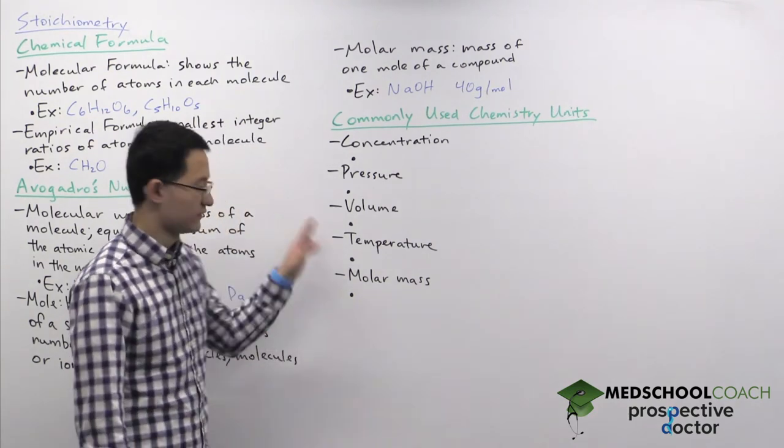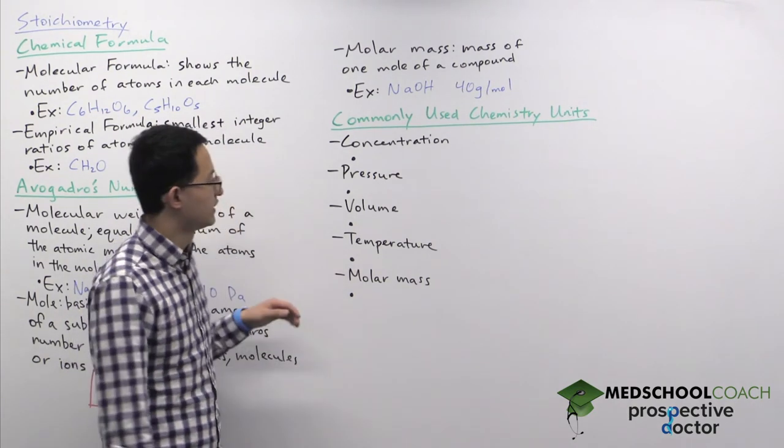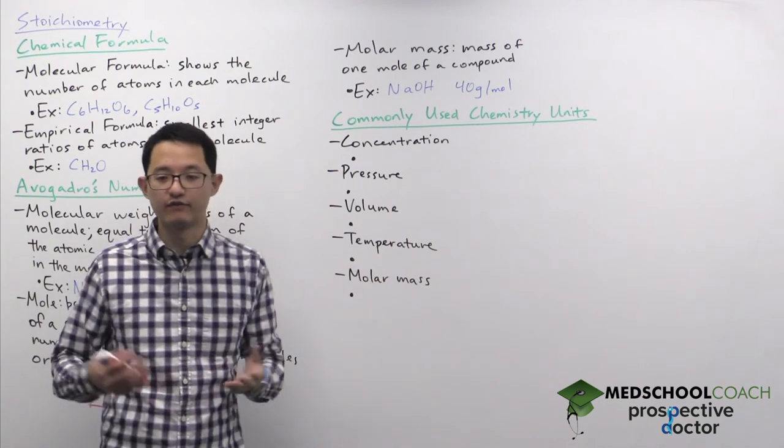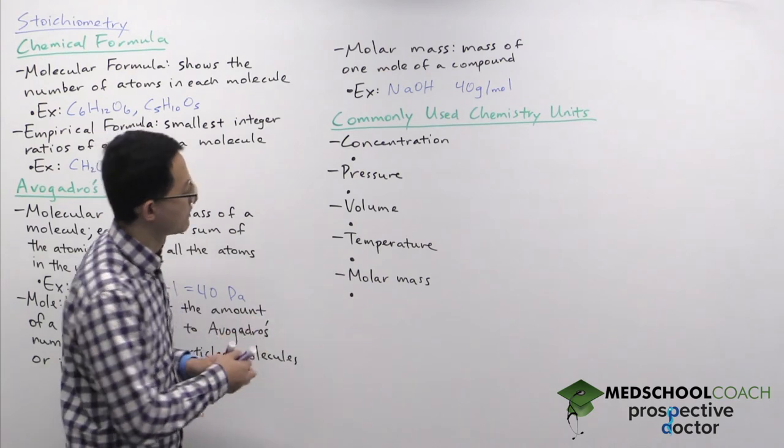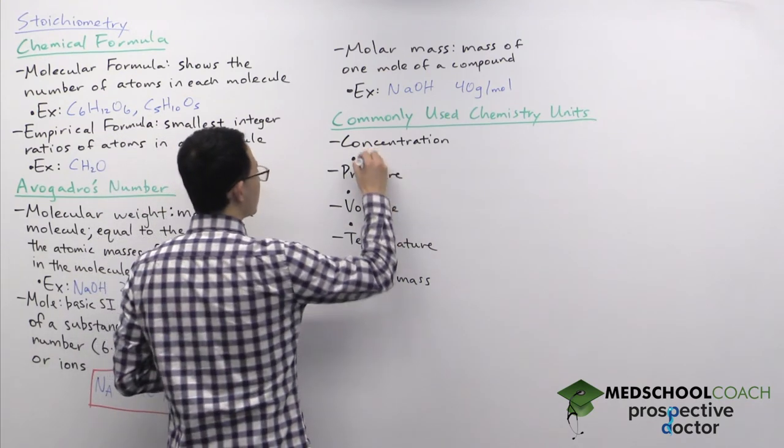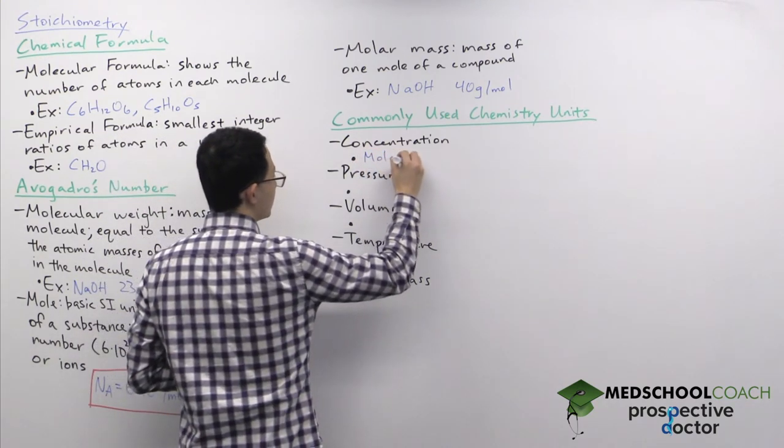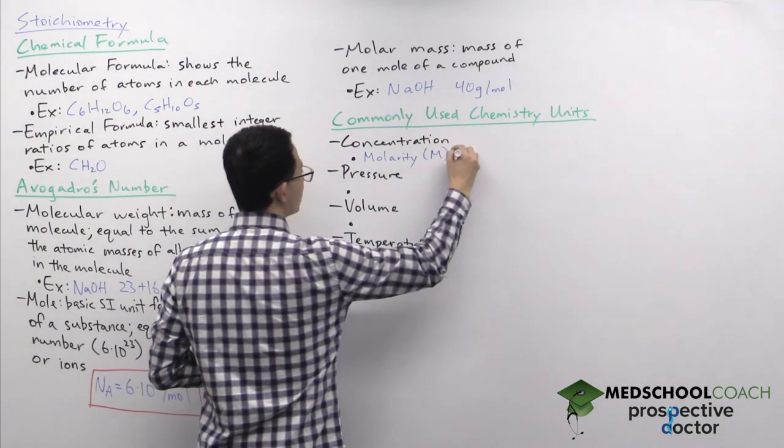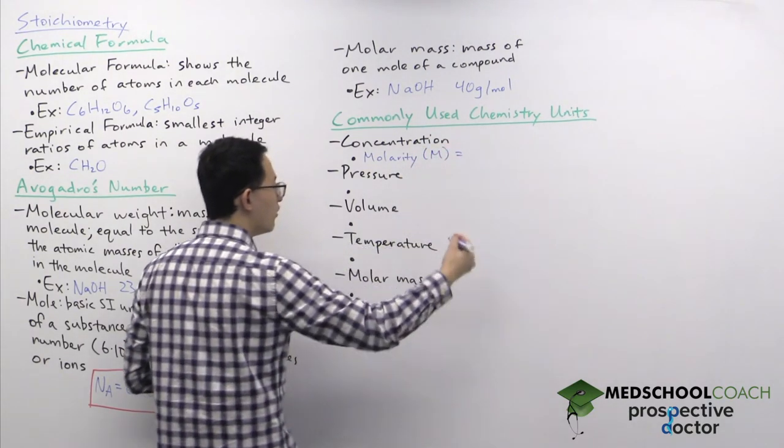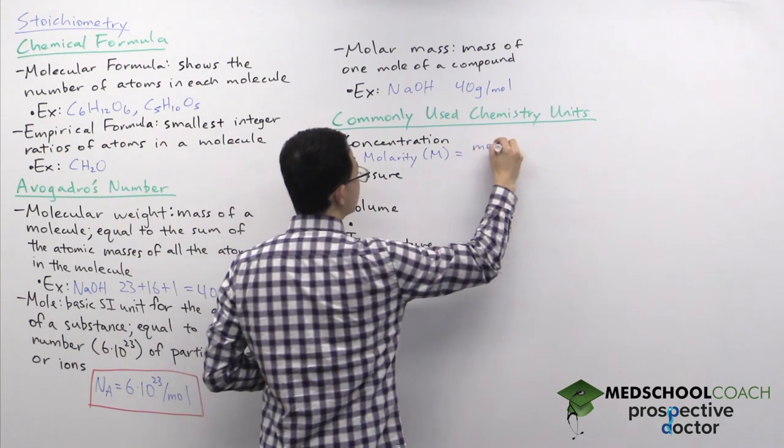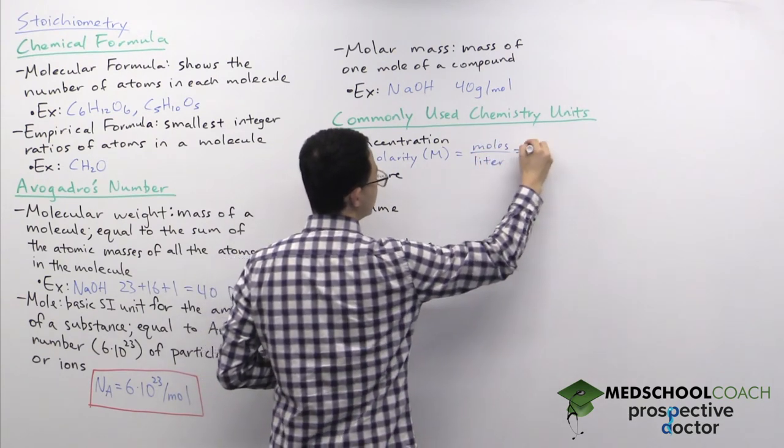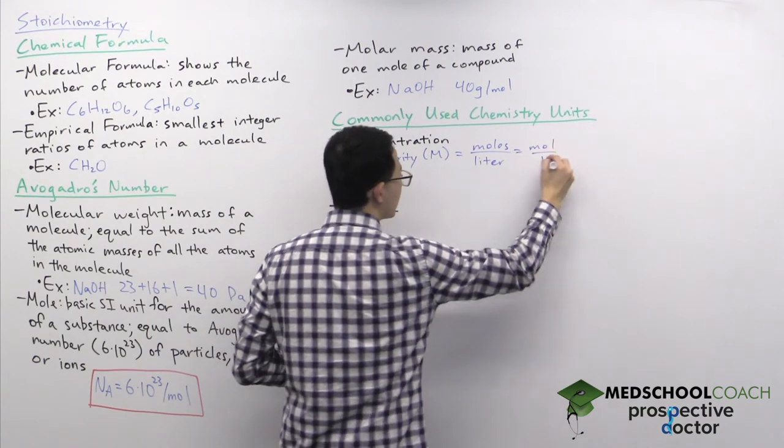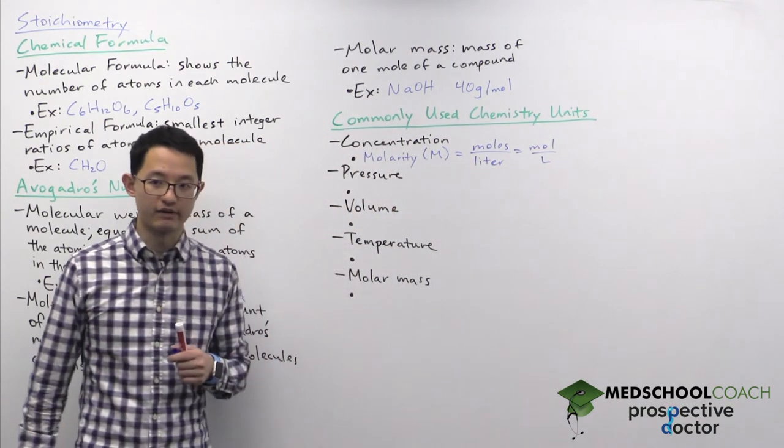Okay, so finally the last thing I want to talk about in this video are the units that you're going to see very frequently in chemistry. So for concentration, the units that we typically use are molarity. So molarity is denoted by a capital M, and molarity is equal to moles per liter. Moles per liter, which we often just write as mole over capital L, molarity.